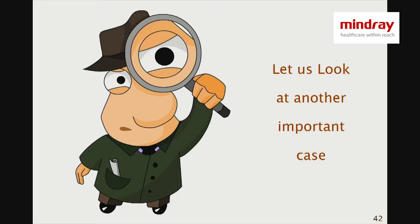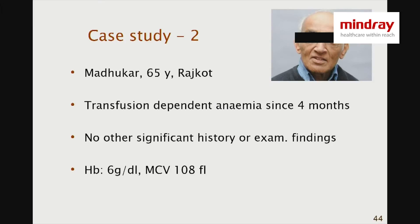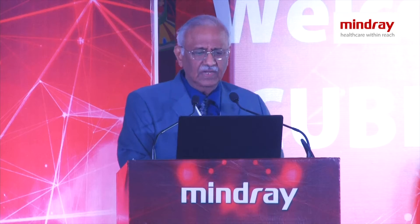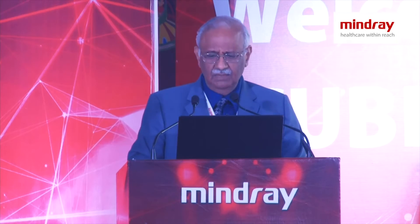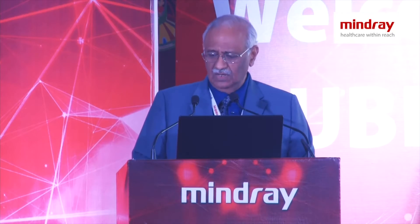Changing gears, we go into the second case — Mr. Madhuka from Rajkot, 65 years old. He also has transfusion-dependent anemia for the last four months. Hemoglobin is around 6, MCV is high, white cells are okay, platelet count is a bit high. He didn't respond to B12 and folic acid; his transferrin saturation and ferritin were high. Bone marrow showed dysplastic changes in a single lineage — the erythroid lineage — and there were 6% ring sideroblasts.